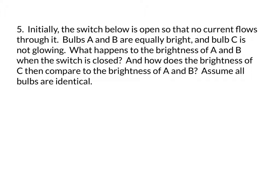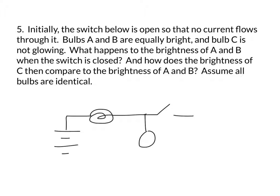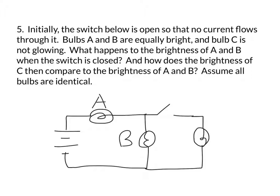Initially the switch is open. We draw the circuit: bulb A, then a junction with a switch that is open, bulb B, another junction leading to bulb C, three bulbs total. With the switch open, no current flows through that part of the loop — A and B are equally bright, meaning they have the same resistance. While the switch is open, this is effectively a series circuit: just that single loop. In a series circuit, equal brightness means equal resistance, so they must be the same bulb.